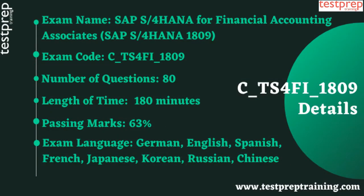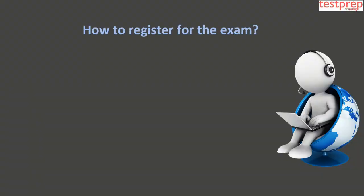Exam Details. 1. Exam name: SAP S/4HANA for Financial Accounting Associates, SAP S/4HANA 1809. 2. Exam code: C_TS4FI_1809. 3. Number of questions: 80. 4. Length of time: 180 minutes. 5. Passing score: 63%. 6. Languages: German, English, Spanish, French, Japanese, Korean, Russian, and Chinese.